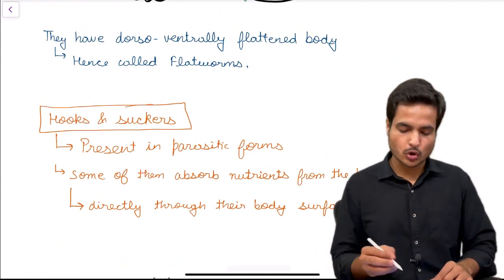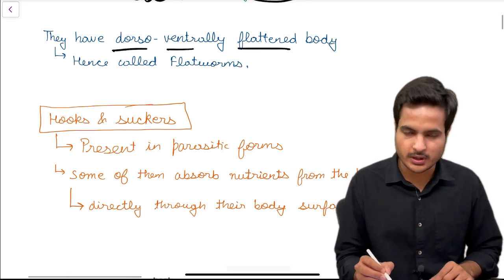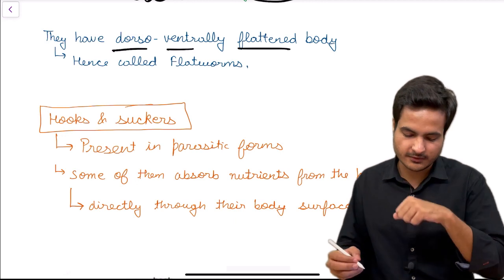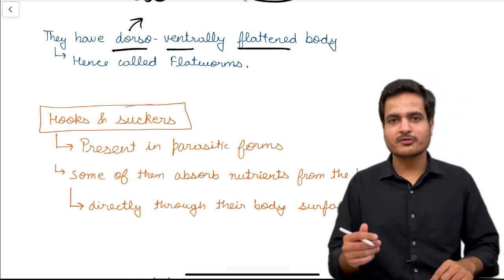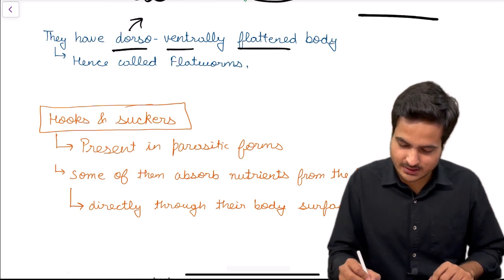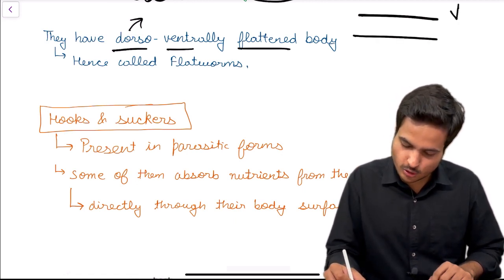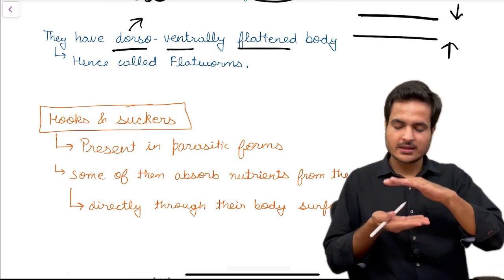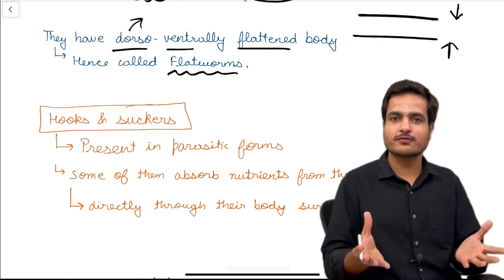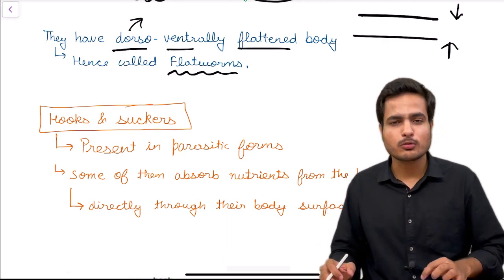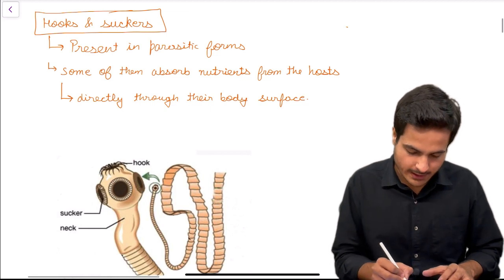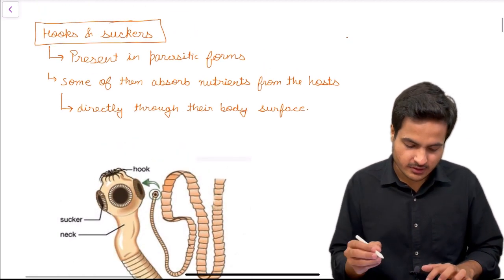Regarding their structure: they have a dorsoventrally flattened body. The dorsal part is the upper surface on which sunlight falls, and ventral is the opposite side. This dorsoventral flattening creates the flat surface of the worm, which is why they are called flat worms.